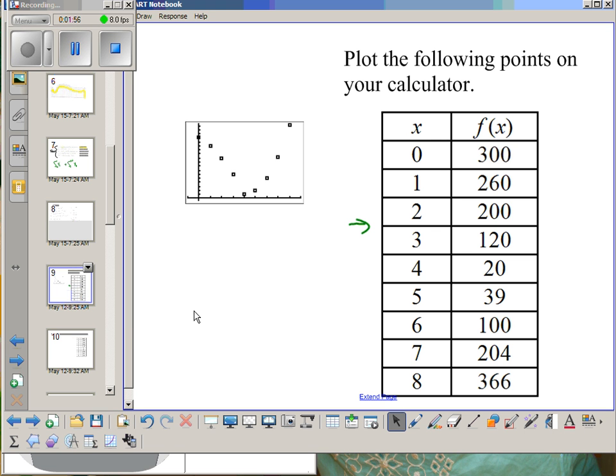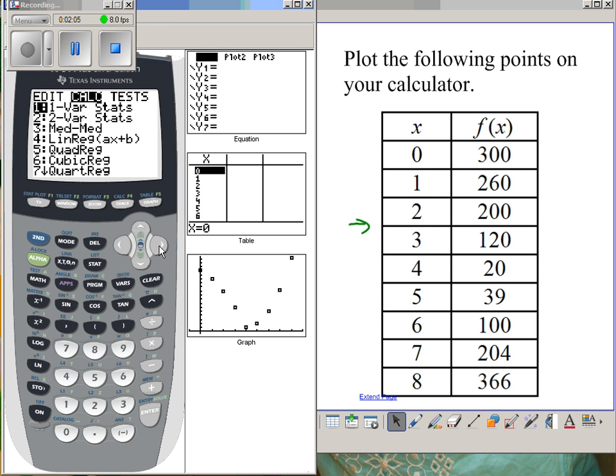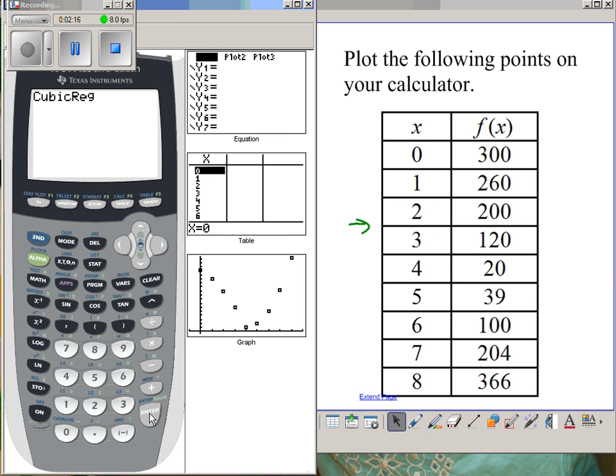Now I need to come up with an equation that's going to match this and I can try to do a regression. I go back to my calculator and regression equations are under statistics calculate. Does not look linear, I also don't think quadratic would be a very good match. So maybe we could try cubic. I don't know if that would work very well but we could give it a shot.